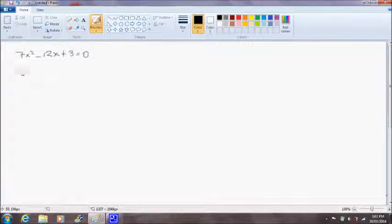And the first thing I want to do is to rewrite this equation as 7x squared minus 12x is equal to minus 3. So I've just taken 3 from both sides of the equation to end up with this here.